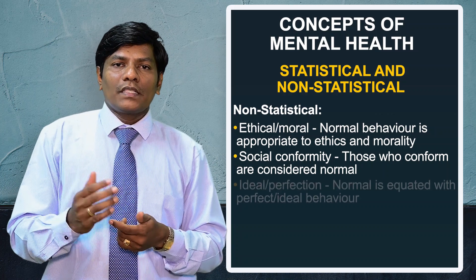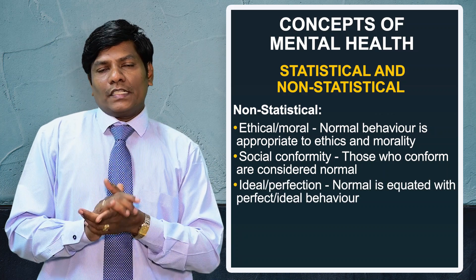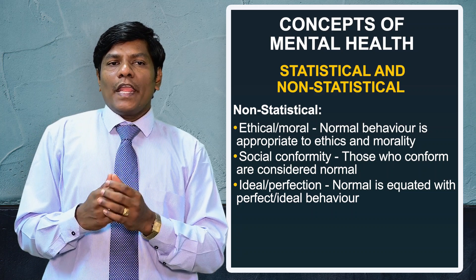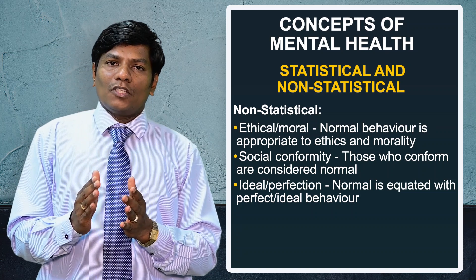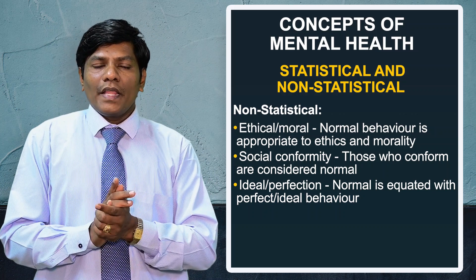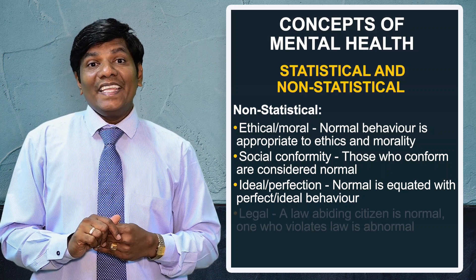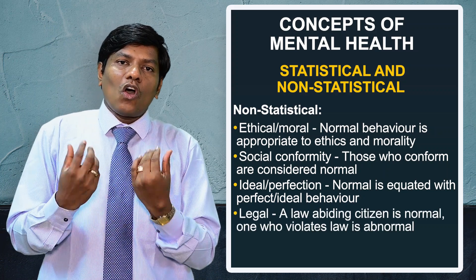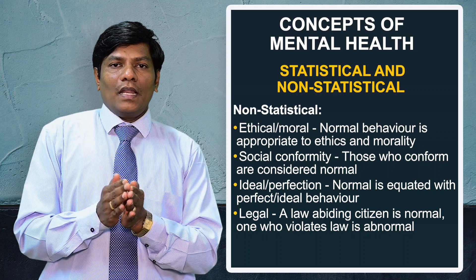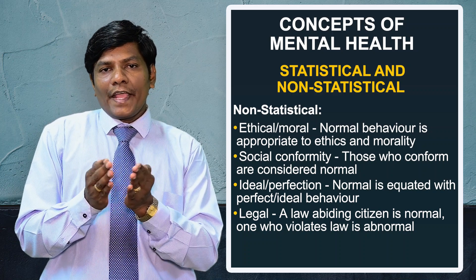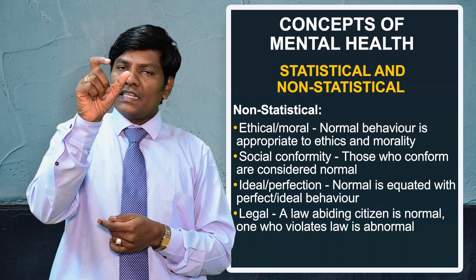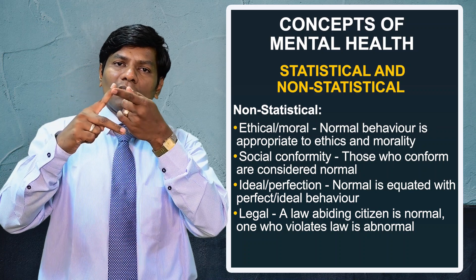The ideal or perfection criteria states that individuals who maintain ideal standards and perfection in their work and duties are mentally healthy, while those who perform poorly are mentally ill. Legal criteria states that those who obey the laws of society are mentally healthy, while those who act against the law are considered mentally ill.